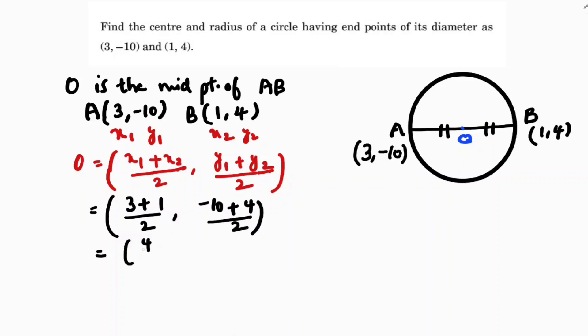Which is 4 by 2 and -6. -6 by 2 is -3. So O is (2, -3). This value is (2, -3).